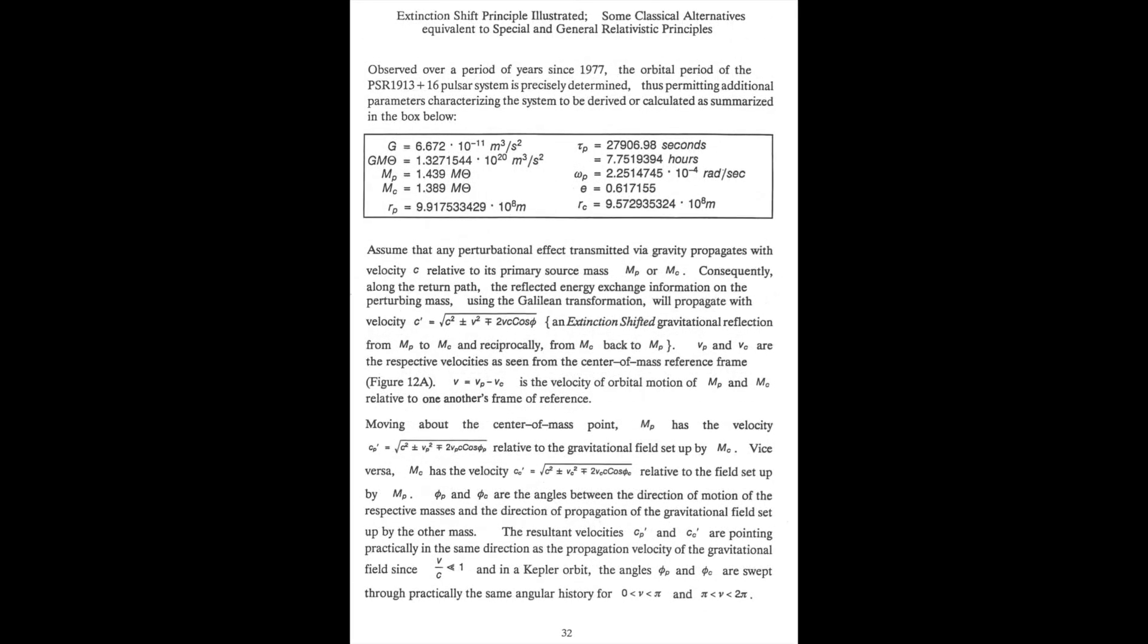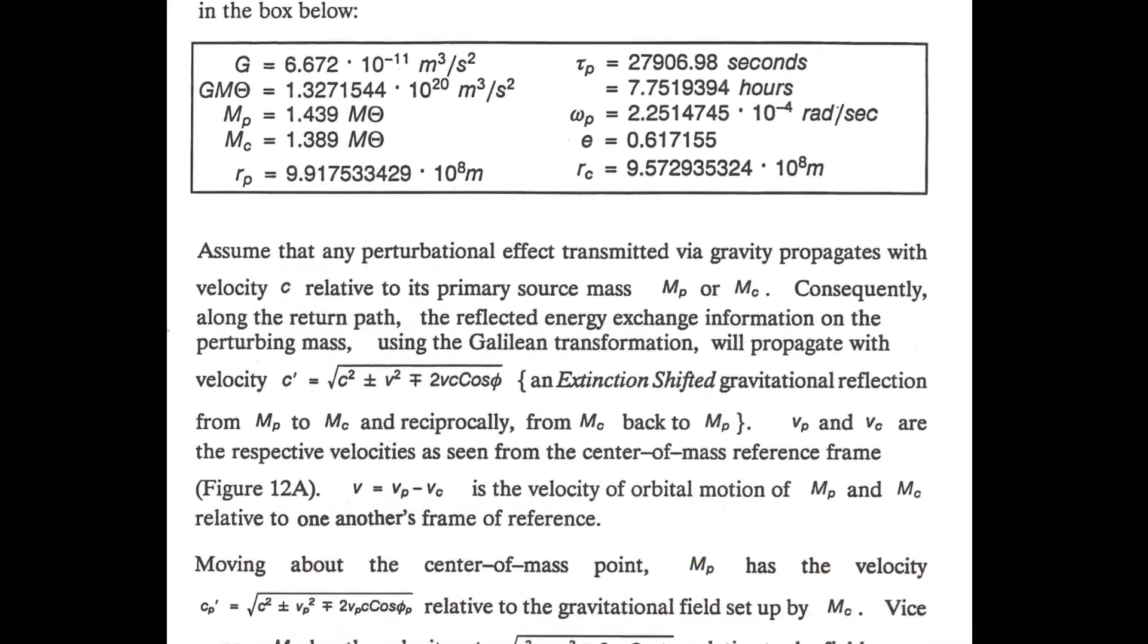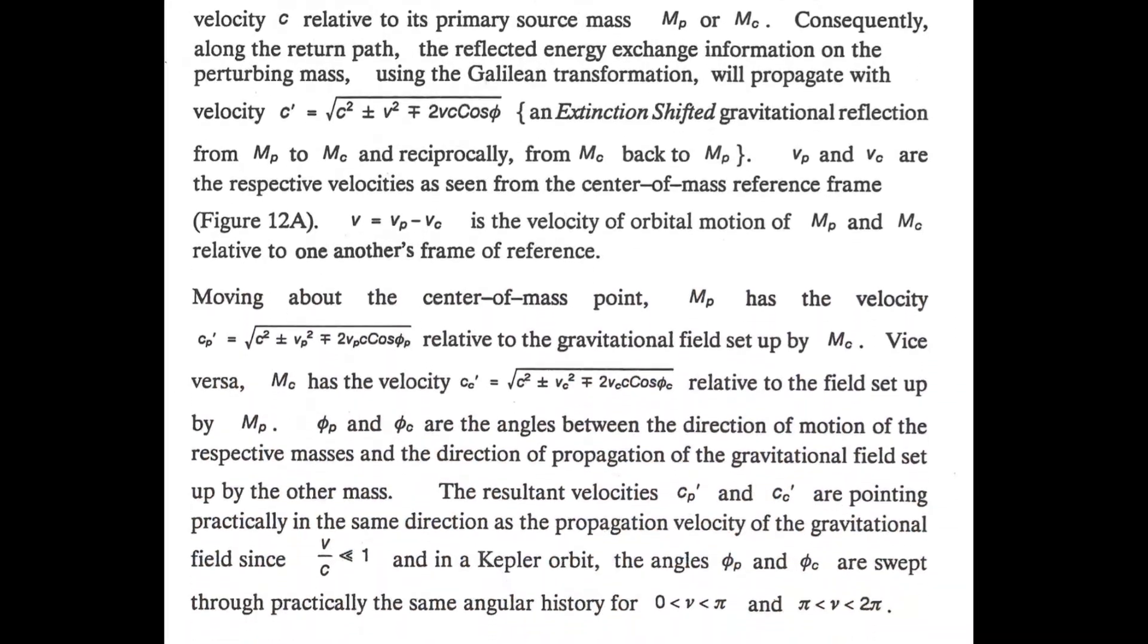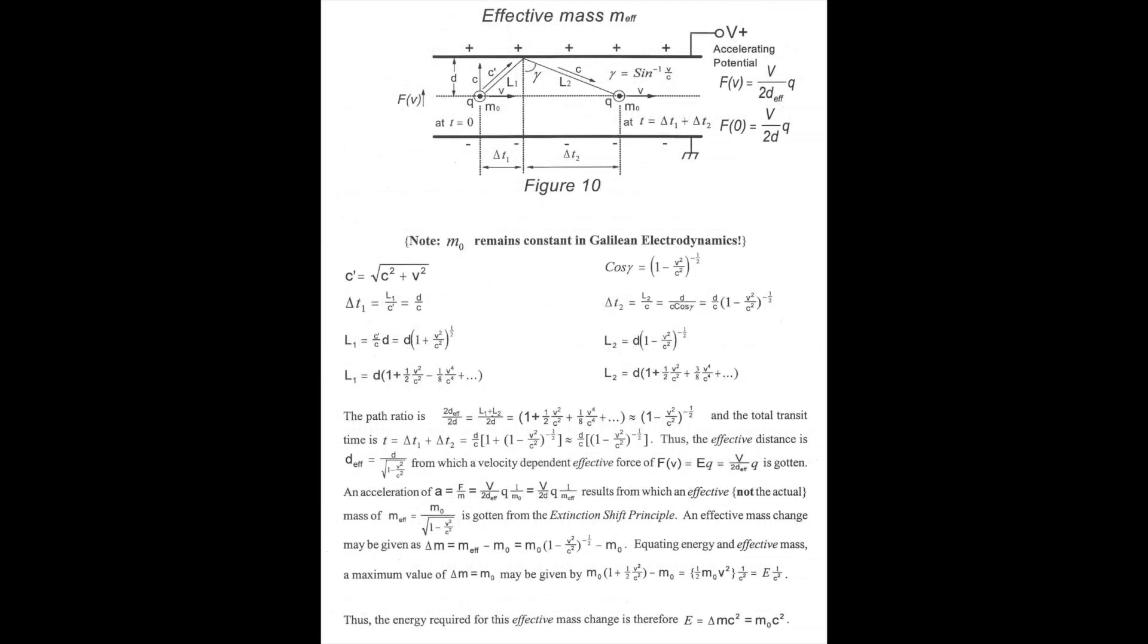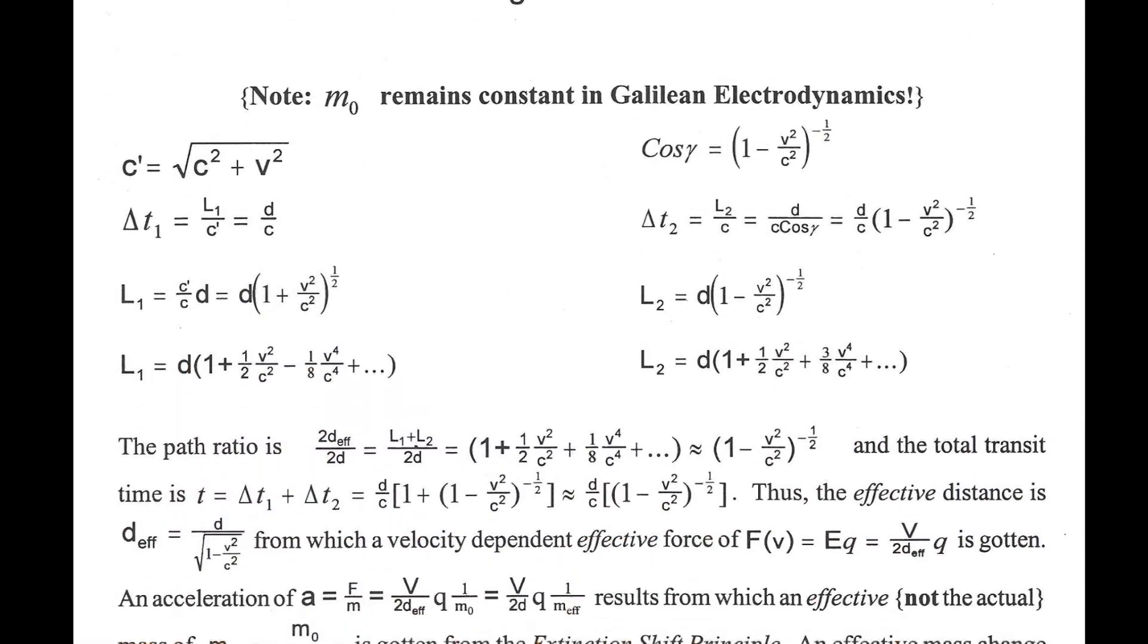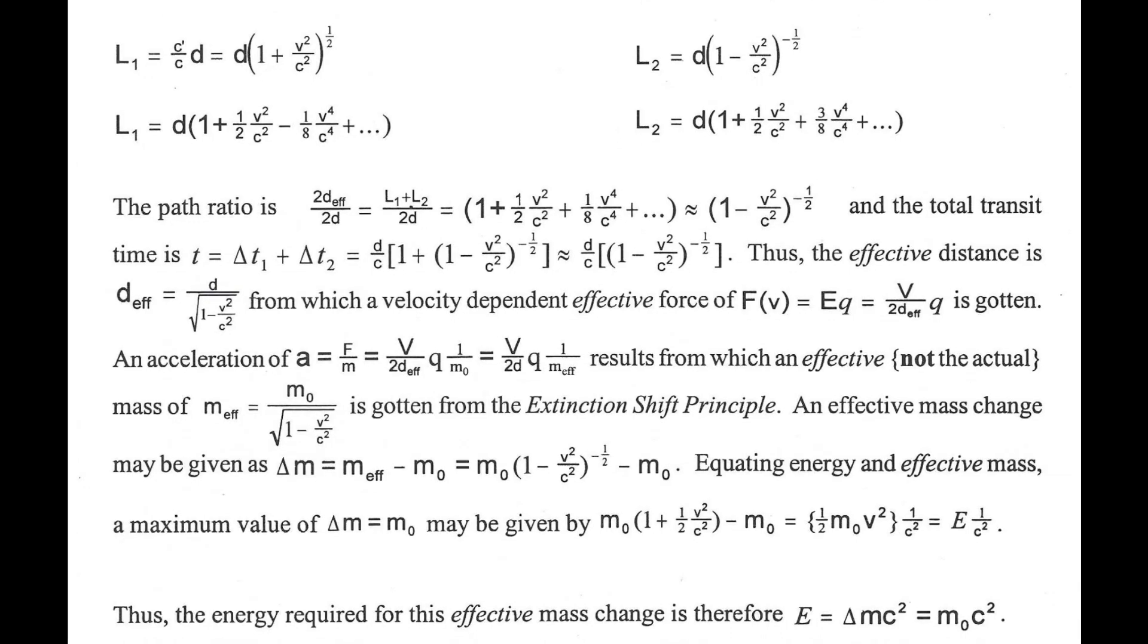Most people base their faith in relativity being valid from the claim that it's the only method to obtain the correct predictions for the perihelion of Mercury. But there is indeed an easier route to yield the same predictions and solutions using less math.